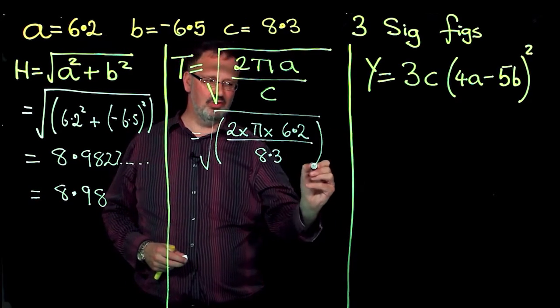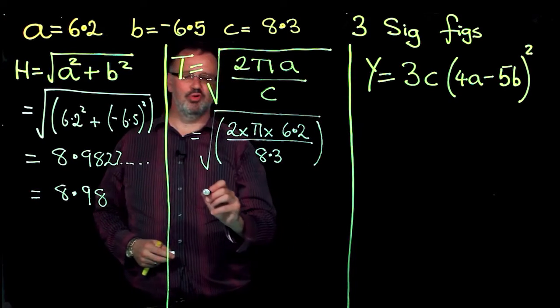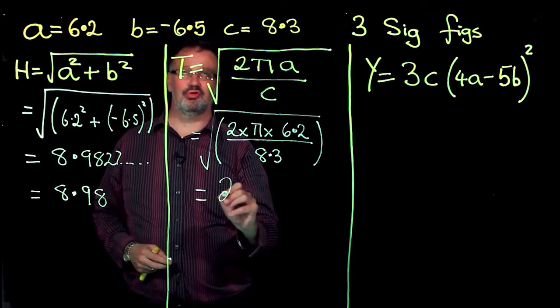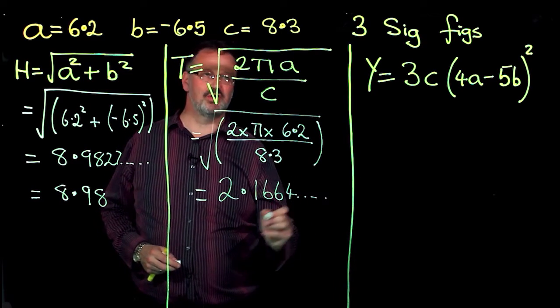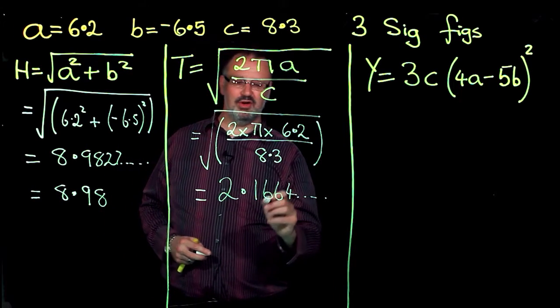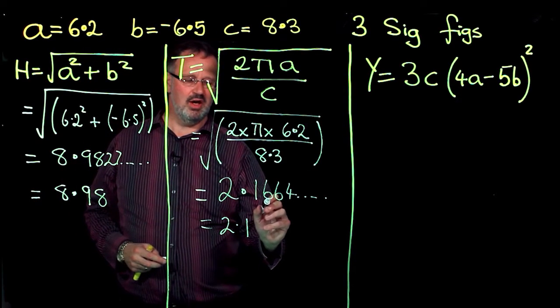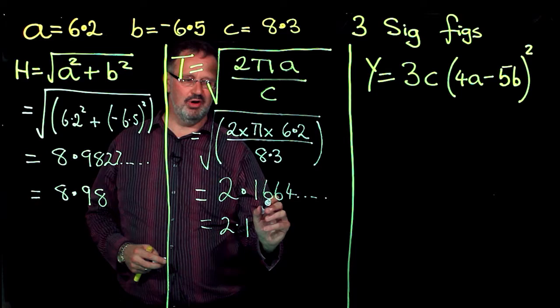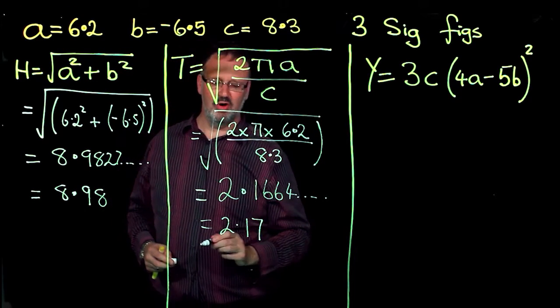And again, don't forget to close the brackets before you push the equal sign, and when you do that, you'll have the solution 2.1664, and some other numbers, three significant figures, I will have 2.1. I have 6 here as my third number, and my fourth number is another 6, so that rounds it up to 2.17.